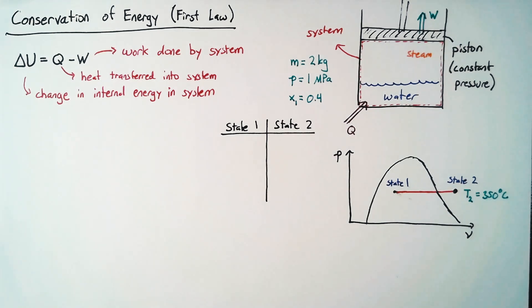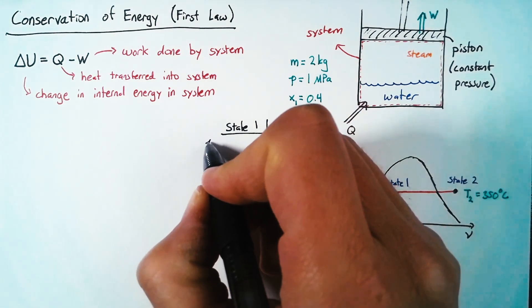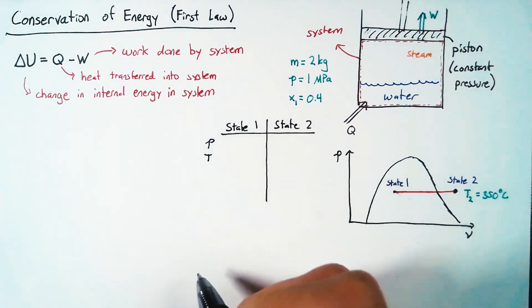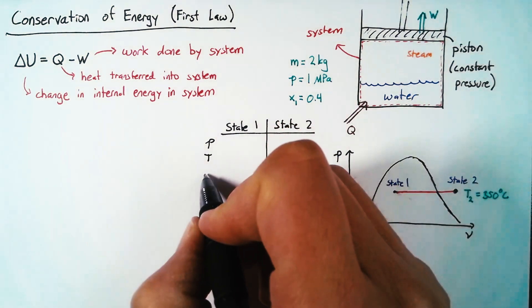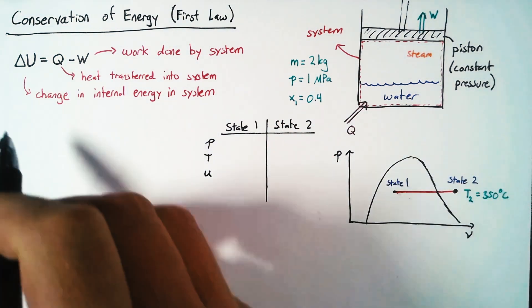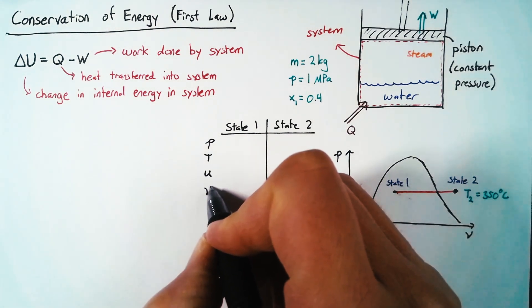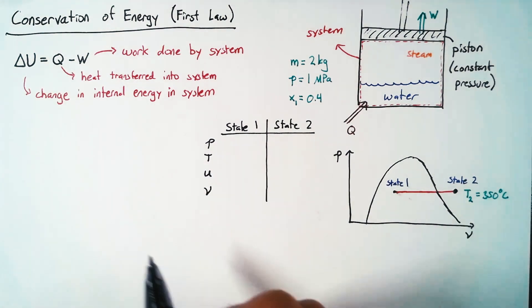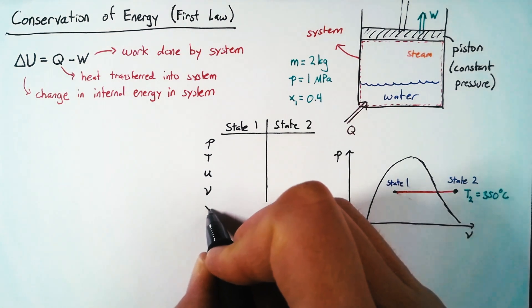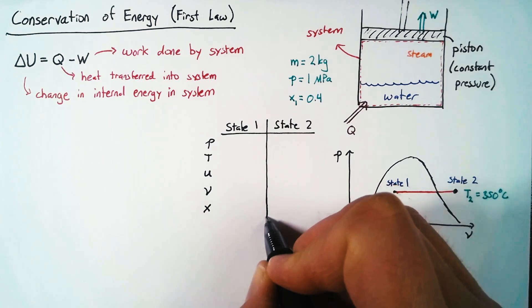And the quantities that we're going to be interested in are pressure and temperature, just because those are things that are given. And then we'll need U because we're interested in this delta U. U is this specific internal energy. Then we'll need specific volume once we get to work. We'll talk about that in a little bit. And then finally, the quality was given for one of our states. So we need that value as well.